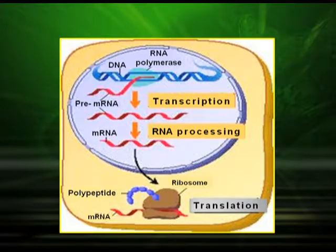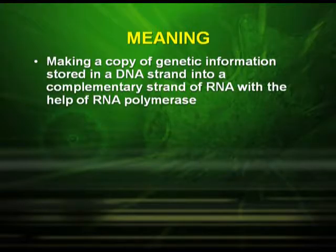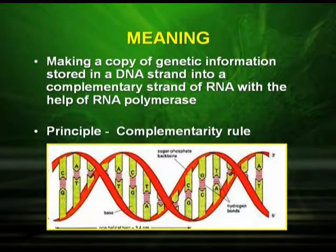As you can see in the picture, transcription takes place in the nucleus, where the DNA forms RNA. Transcription is making a copy of genetic information stored in a DNA strand into a complementary strand of RNA with the help of RNA polymerase. It is based on the principle of the complementarity rule.